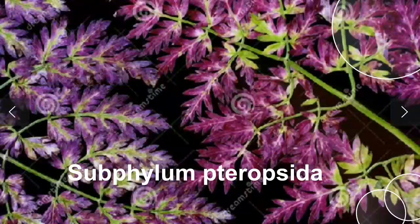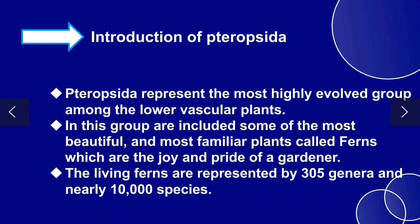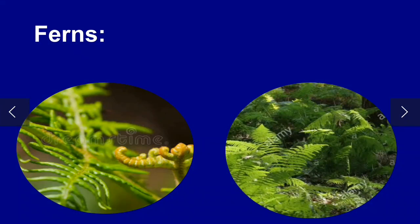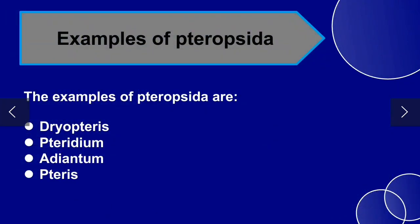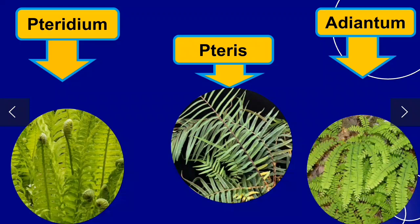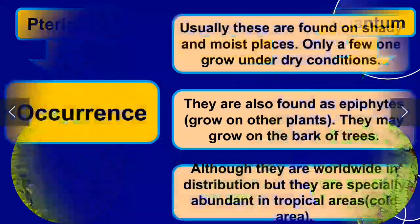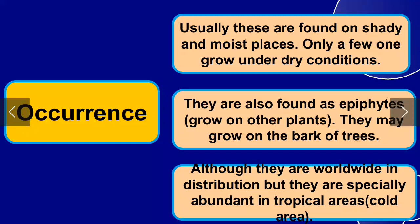Pteropsida represents the most highly evolved group among the lower vascular plants. Living forms are represented by 305 genera and 10,000 species. You can see here pictures of ferns — for example, Adiantum. These are usually found in shady and moist places; only a few grow under dry conditions. They are also present in the form of epiphytes.